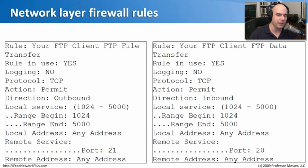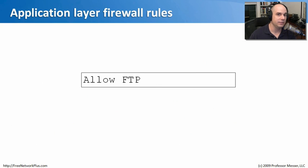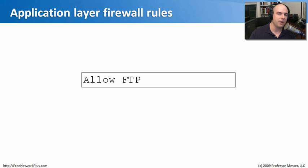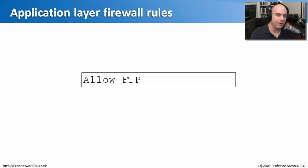If we create an application layer firewall rule, it looks very different. An application layer firewall looks into the packets themselves to determine what application is going across. The rule simply says: if I'm inside my network, allow FTP to go out. It doesn't care what port numbers FTP uses or how many. Application layer firewalls are designed to understand inherently how FTP works and figure out all the details from there — a much simpler, easier way to set up rules.